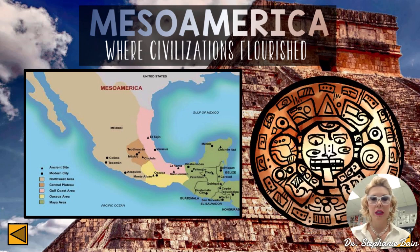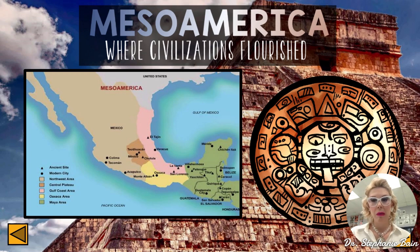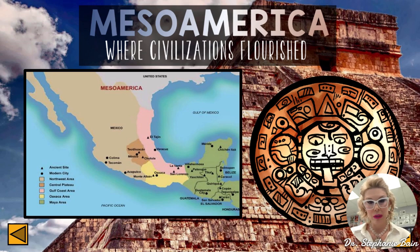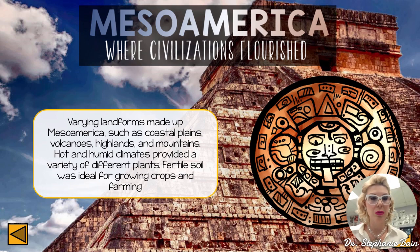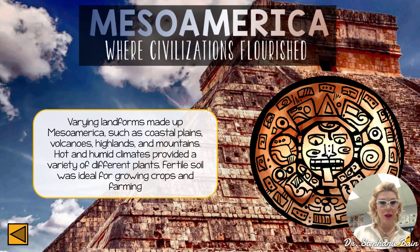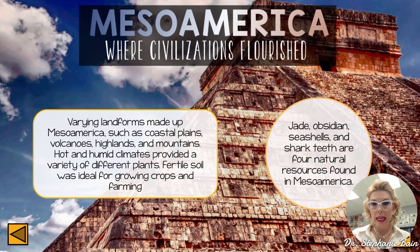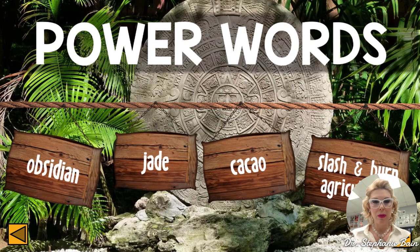Looking at the map, Mesoamerica stretched from Mexico all the way down to Latin America and part of South America. While we'll focus on the most well-known civilizations found in history books, know that there were many other smaller Native American groups throughout the Americas. Varying landforms made up Mesoamerica, such as coastal plains, volcanoes, highlands, and mountains. The hot and humid climate provided a variety of plants, fertile soil was ideal for crops, and jade, obsidian, and shark teeth were natural resources found there.